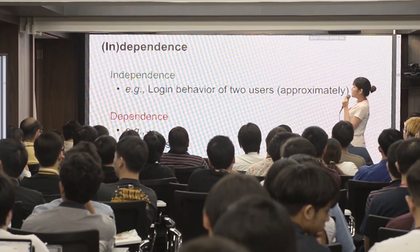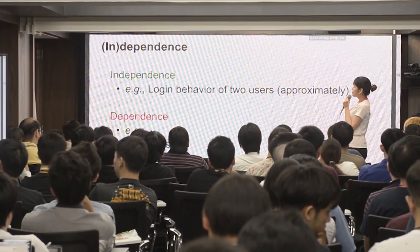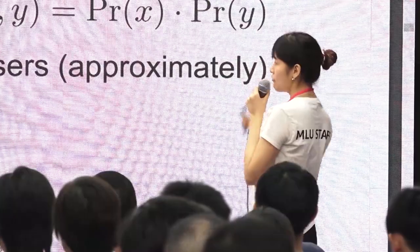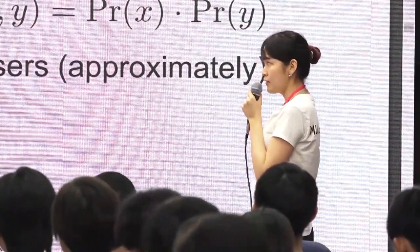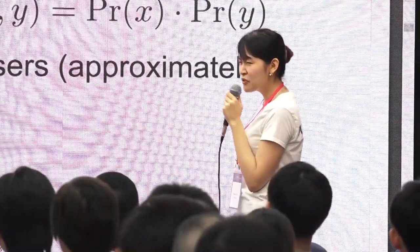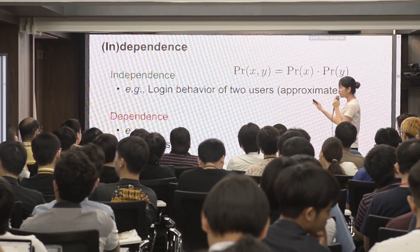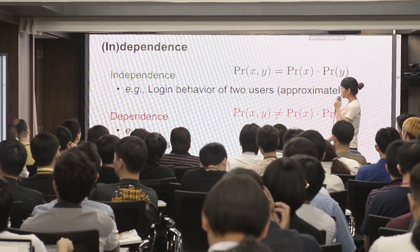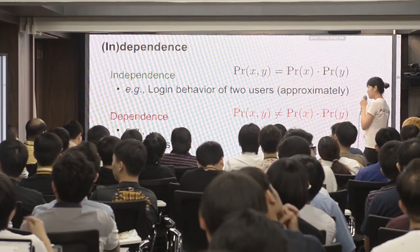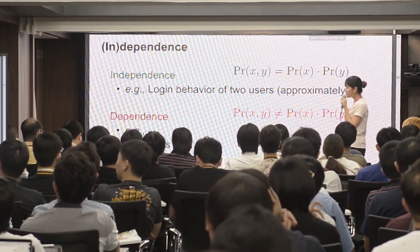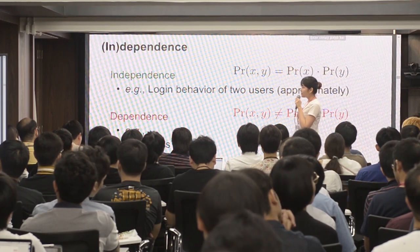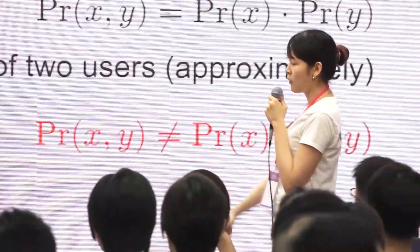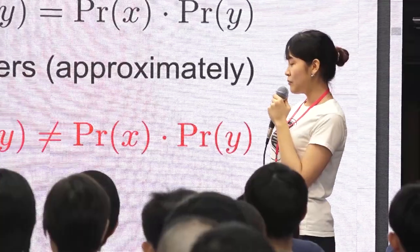Independence: two events are independent if P(X and Y) = P(X) × P(Y). For example, the login behavior of two strangers is probably independent. Dependence is the opposite — P(X and Y) ≠ P(X) × P(Y). For example, if you send someone an email, their reply is dependent on your email. Similarly, a query and its result, or spam emails, are dependent events.